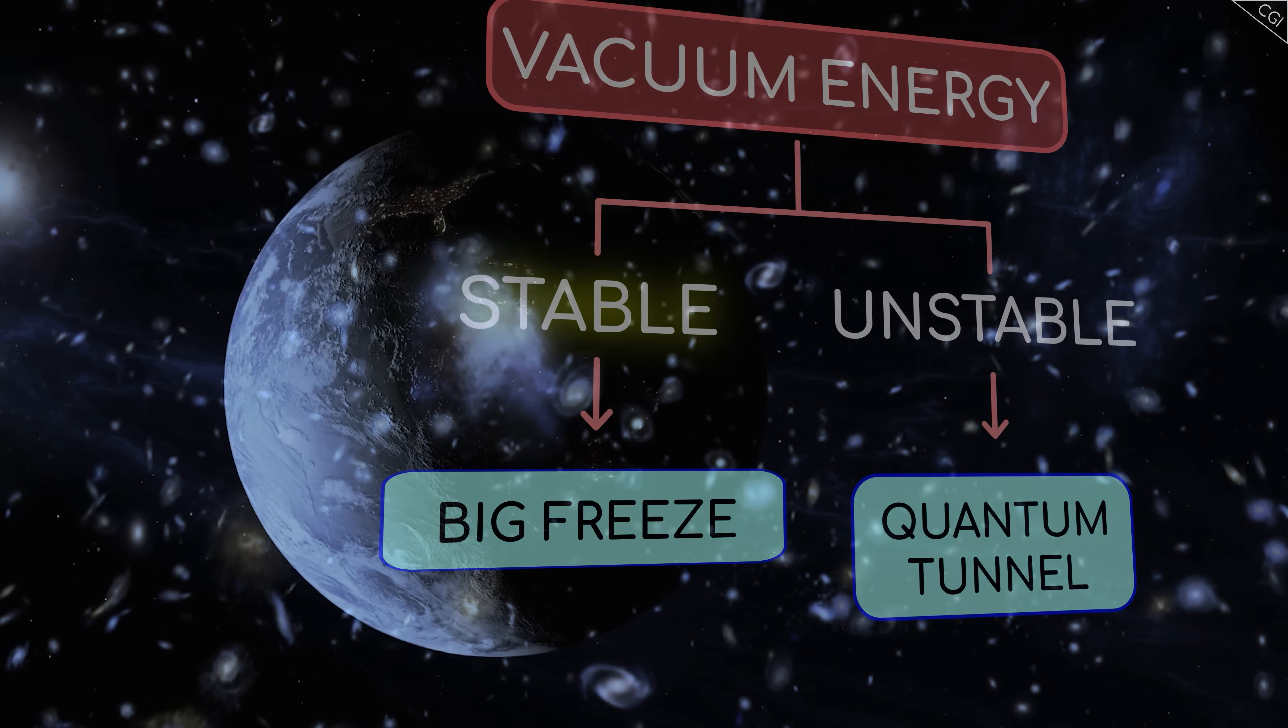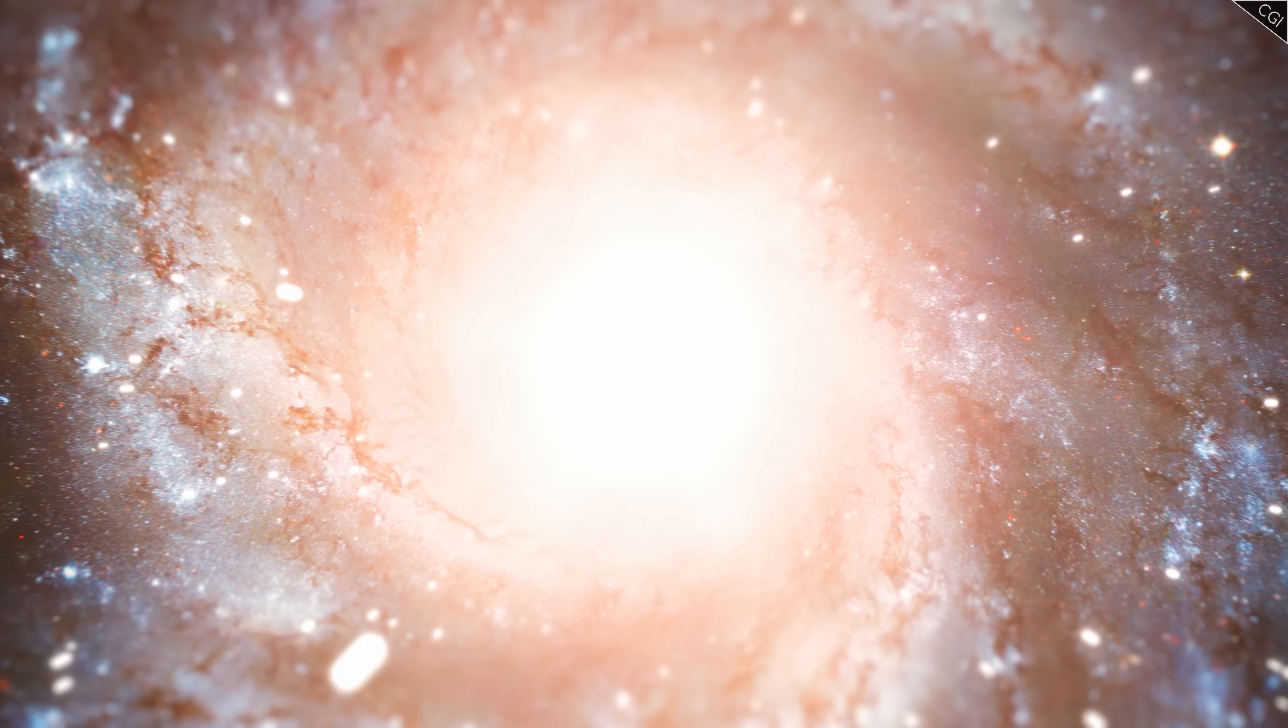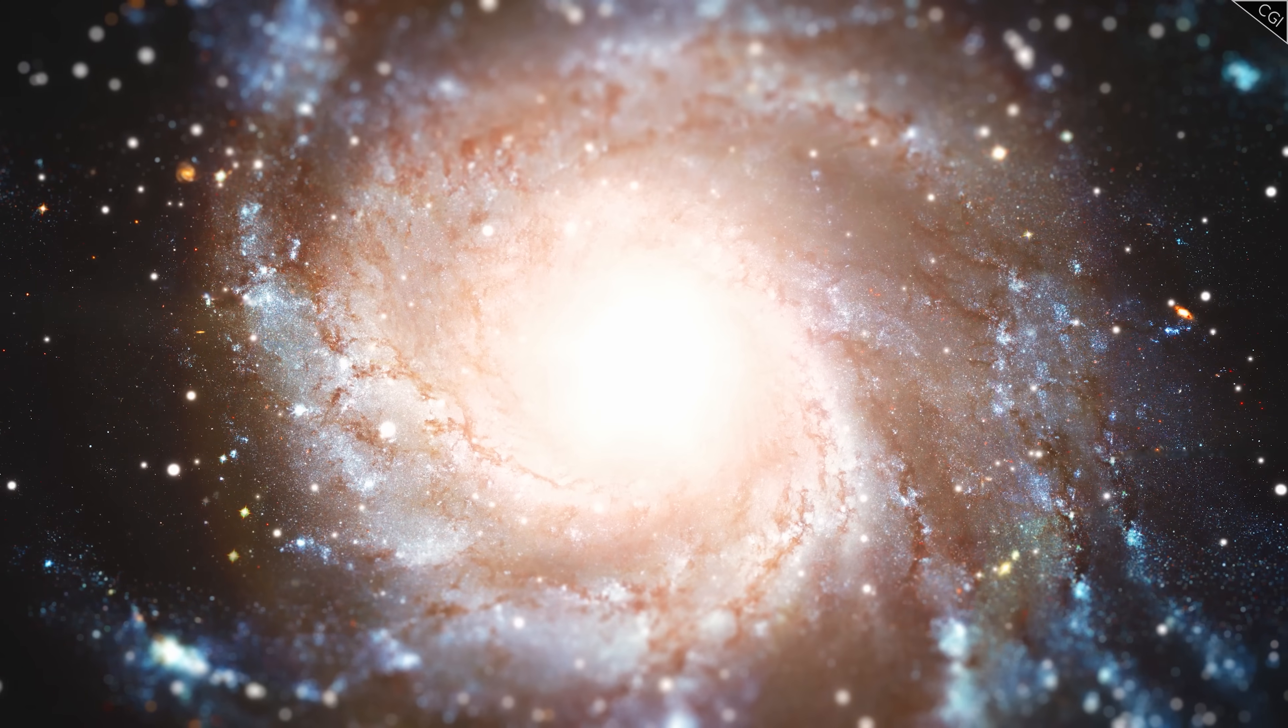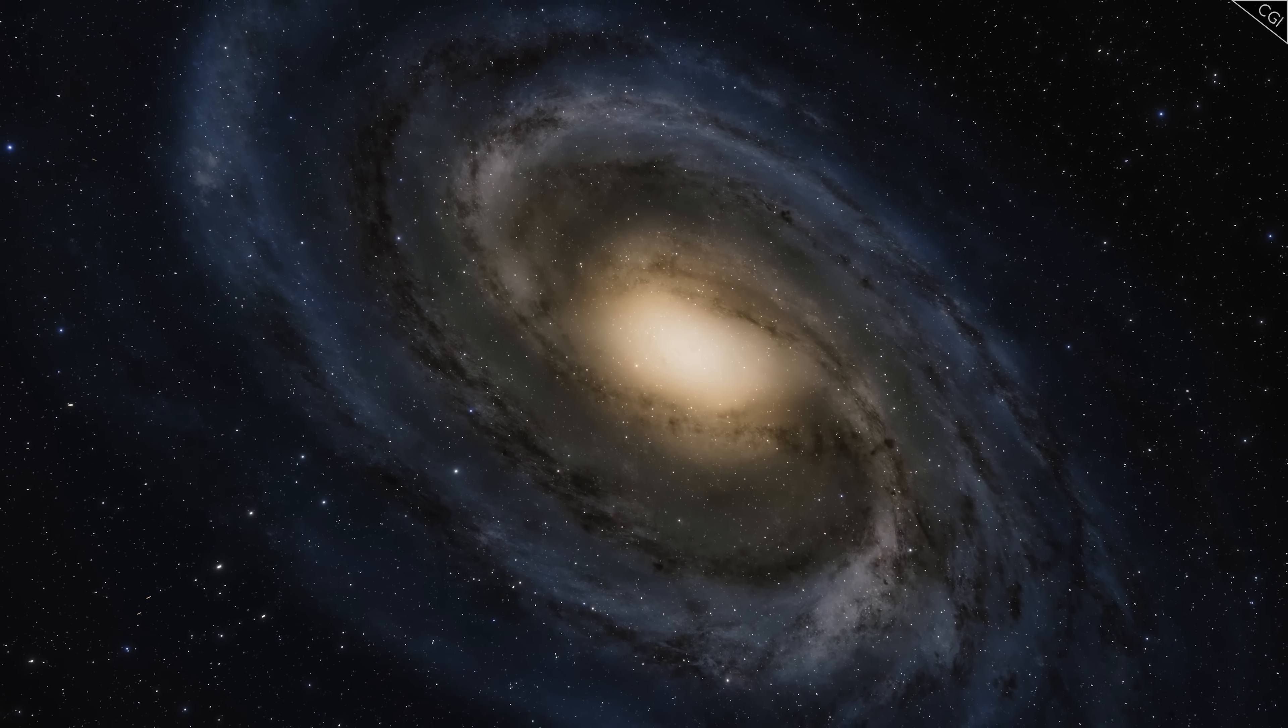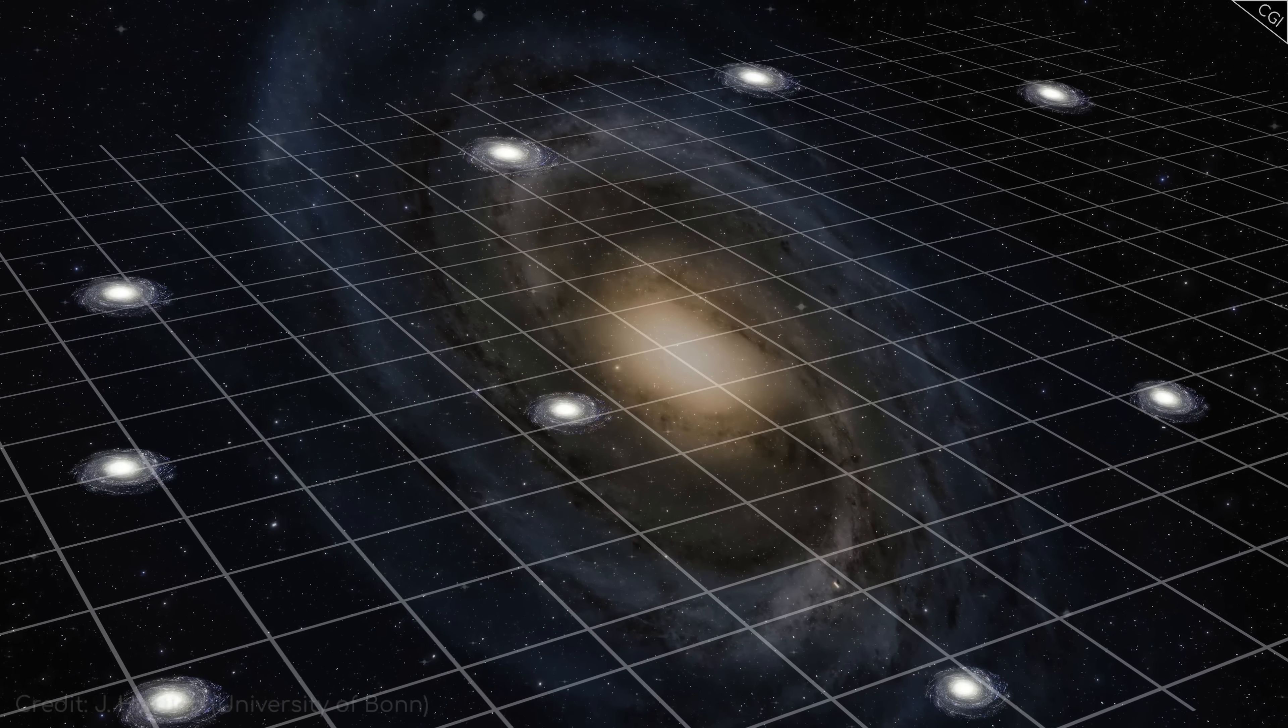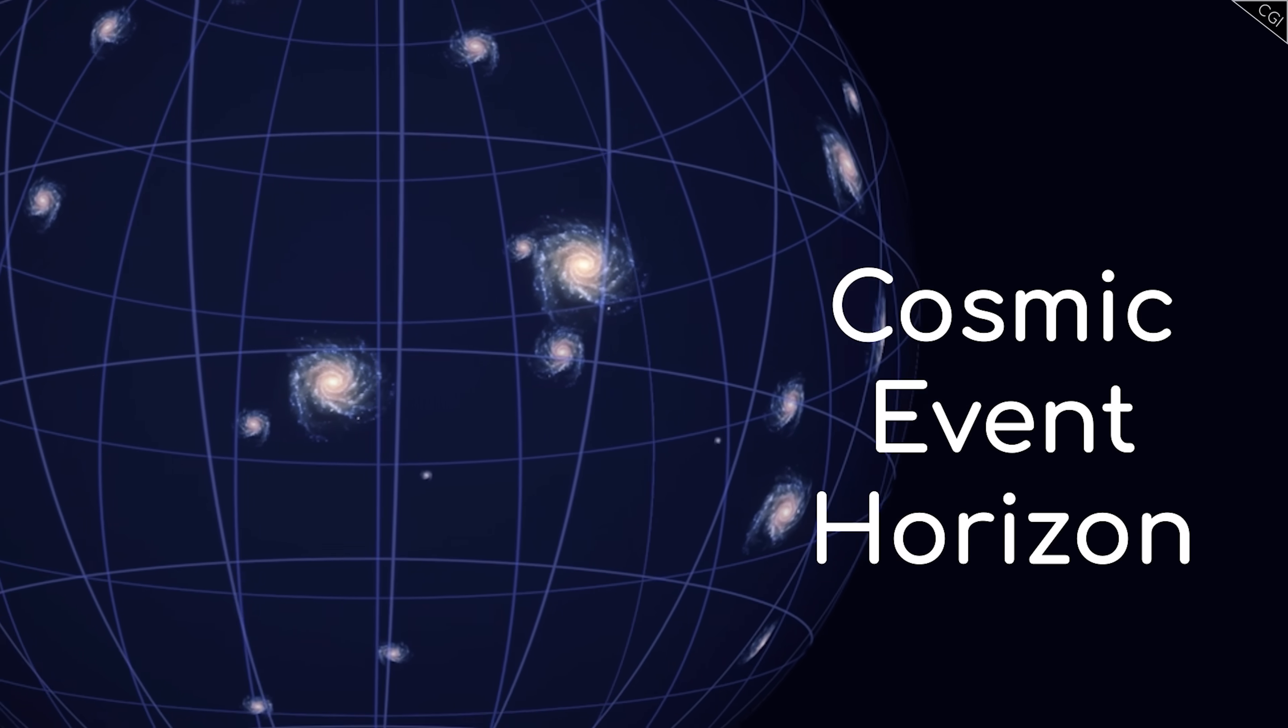The good news is, you wouldn't notice anything changing here on Earth, or even throughout the Milky Way, since there's enough mass concentrated in this small region to counteract the gravitational repulsion coming from dark energy. But if you zoom out beyond that, you'll notice that distant galaxies are being accelerated away from our own in all directions, eventually crossing a threshold known as the Event Horizon.